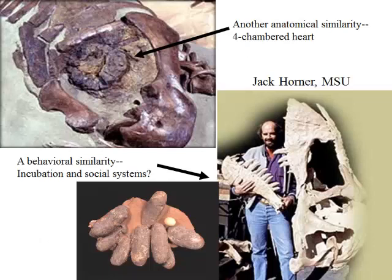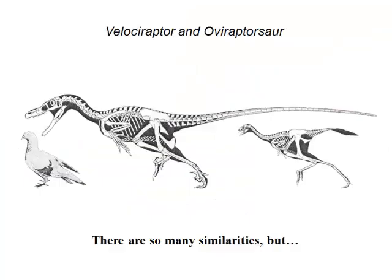Jack Horner at Montana State and the Museum of the Rockies began studying what appeared to be the social systems of dinosaurs, which looked much more like the parental care that warm-blooded critters give their young. He wrote about dinosaur parents caring for babies, finding eggs in clusters and nests, and other anatomical features suggesting these were warm-blooded animals. So there are many similarities — derived characteristics, whether behavioral, anatomical, or physiological — that link dinosaurs to birds.